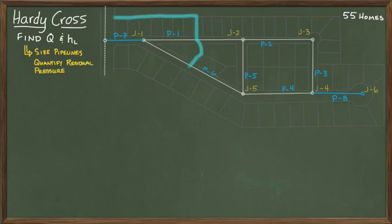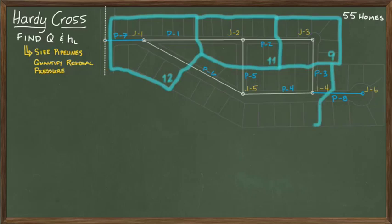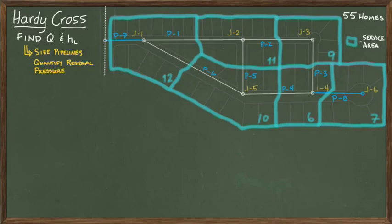To proceed we must subdivide the system into service areas, in this case six service areas. The numbers in blue here are the number of houses in each service area. The number of homes helps us compute the water demand for each junction, which we'll label as Q and show it with an arrow leaving the junction.